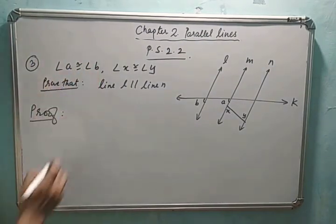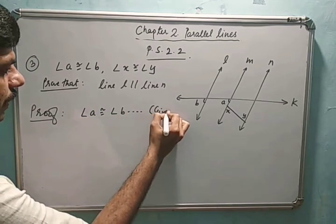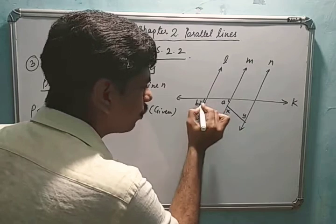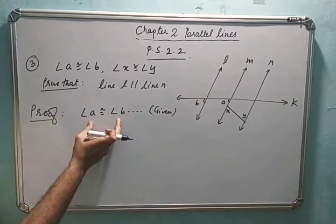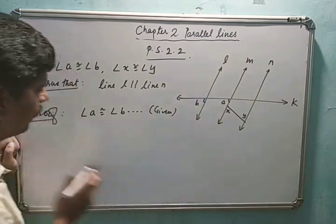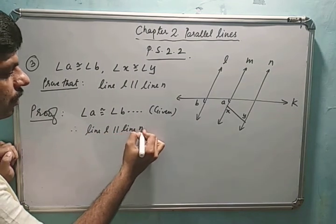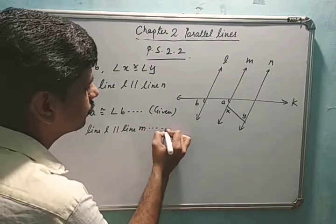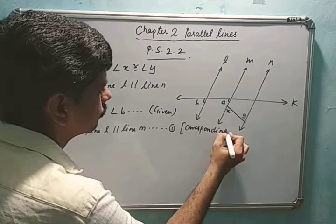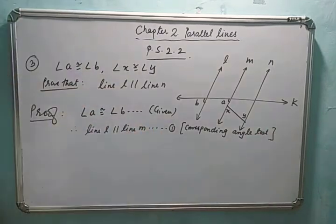Let's start with the given data. Angle a is congruent to angle b — reason: given. If you look at a and b, they are corresponding angles. So the given data says that corresponding angles between l and m are congruent. Therefore, line l is parallel to line m — reason: corresponding angle test. This is statement number 1.